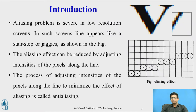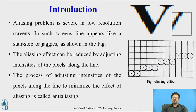The pixel representation shows the aliasing effect, where you can see rows with two or three pixels in sequence. The aliasing effect can be reduced by adjusting the intensity of the pixel along the line. This process of adjusting intensities of pixels along the line in order to minimize the effect of aliasing is called anti-aliasing.